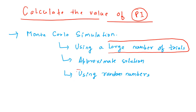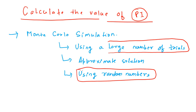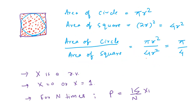We do that using random numbers. Computers help us in creating random numbers. Of course, it's a very difficult thing to create purely random numbers, but to a large extent computers give us a list of random numbers using which we can find the approximate solution. So let's see how we can solve this problem.